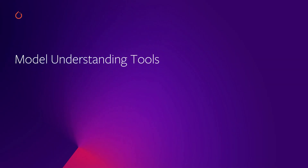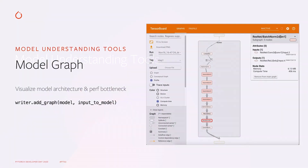The next section is about model understanding tools in TensorBoard. The graph plugin allows us to visualize the model architecture and identify performance bottlenecks. You just need to pass in a PyTorch model and an input tensor, and then the model graph will be generated automatically and logged to TensorBoard.